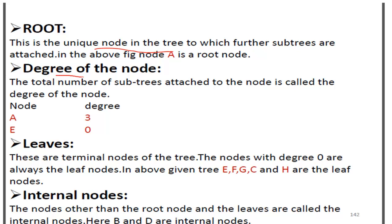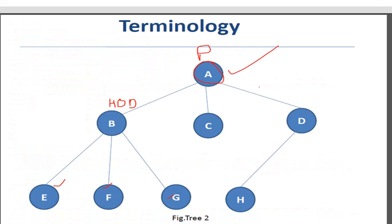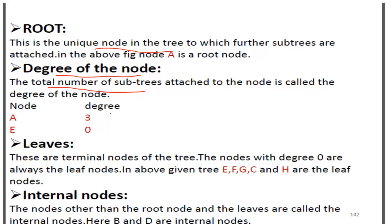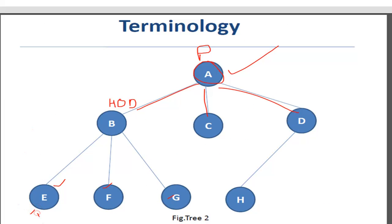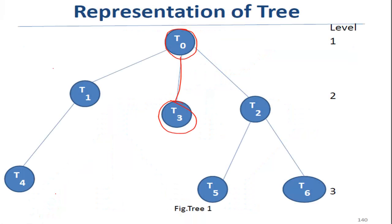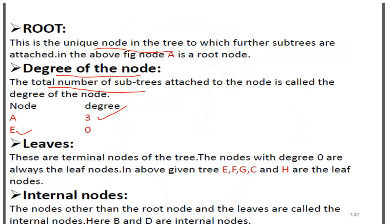The second terminology is degree of a node. The total number of subtrees attached to a node is called the degree of that node. Subtrees connected to A are three, so the degree of A is three. Degree is the number of subtrees attached to a node. For node E, there are no further subtrees, so the degree of E is zero.